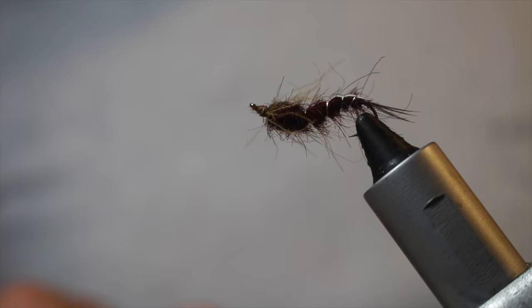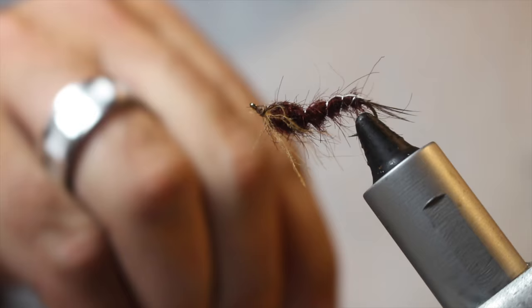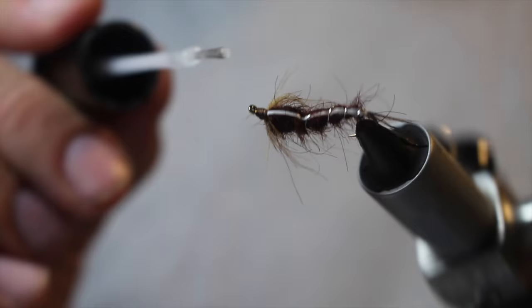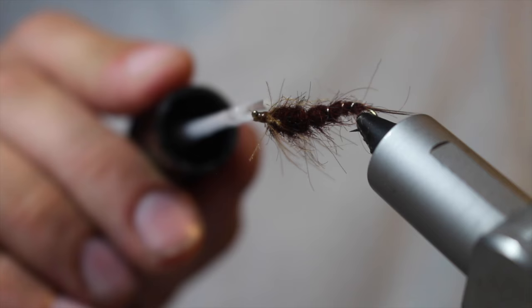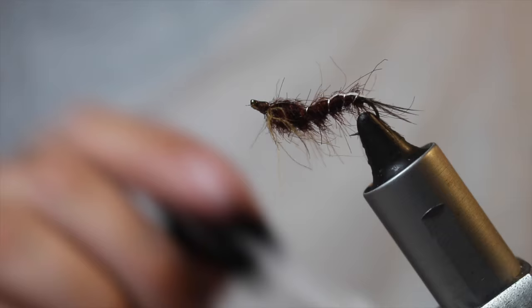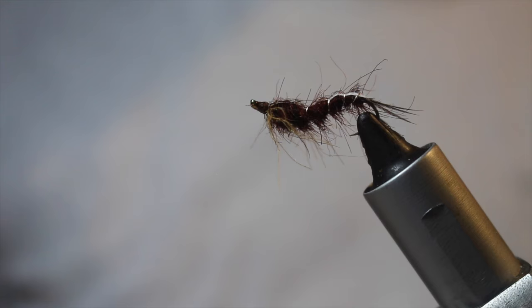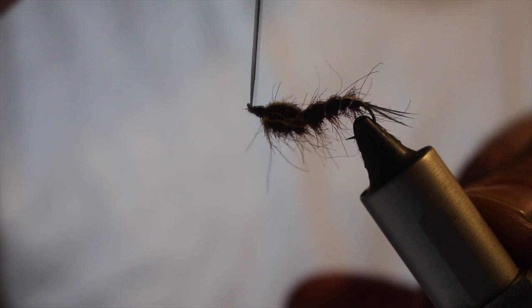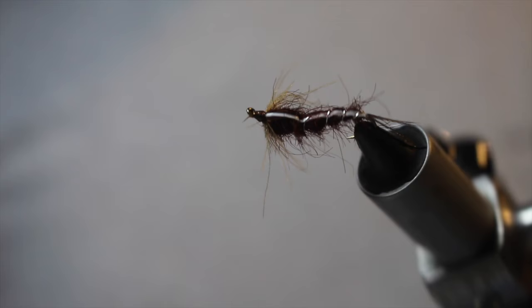Some people like to go in then with a coat of super glue to harden that head up. I don't have any right now, otherwise I would. I really like that idea. It sets quickly, hardens everything, and then you can go in with a coat of varnish. I'm just going to use some Sally Hansen's, hard as nails. If you've got zap-a-gap, hard as hull. All of those things work well. Be careful not to touch those CDC fibers. They are so delicate that if any adhesive or something that will harden gets on there, it will not look right in the water. They'll just stick straight out. Take my bodkin. Clean out the eye. And that is it. That is your Isonychia swimming nymph.